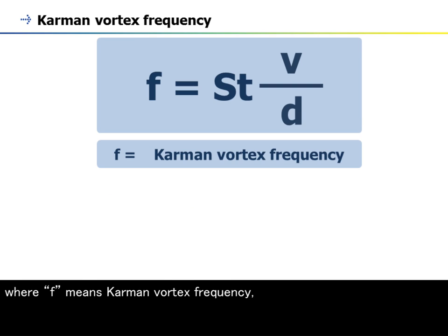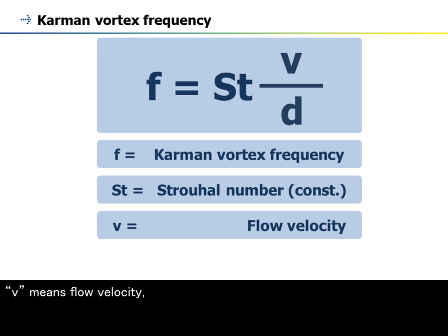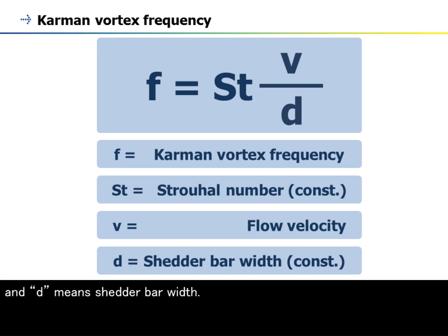Where f means Karman vortex frequency, St means Strouhal number, v means flow velocity, and d means shedder bar width.